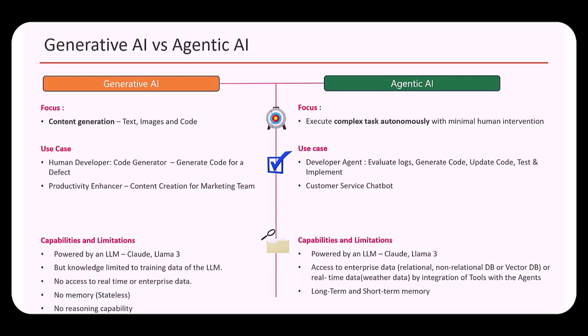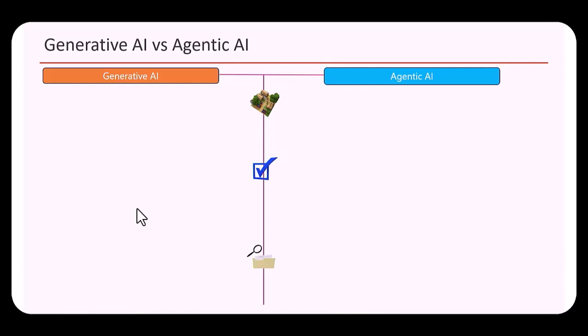Generative AI also does not have any reasoning capability to break down a user request into multiple tasks. That capability is available with agentic AI, where it evaluates the user request and breaks it down into smaller subtasks using the large language model.